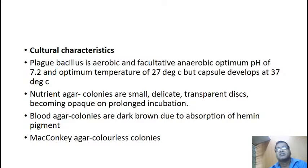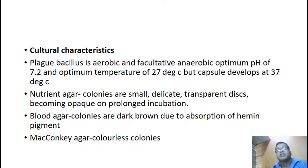Coming to cultural characteristics: plague bacillus is aerobic and facultative anaerobic. Optimum pH is 7.2, temperature 27 degrees Celsius, but capsule develops at 37 degrees Celsius. We use simple media like nutrient agar, blood agar, and MacConkey. Nutrient agar colonies are small, delicate, transparent, becoming opaque on prolonged incubation. Blood agar colonies are dark brown due to absorption of hemin pigment. MacConkey agar gives colorless colonies.